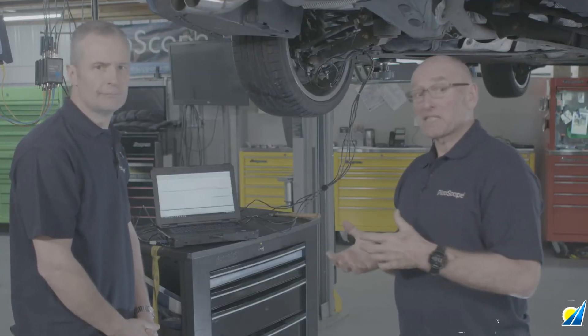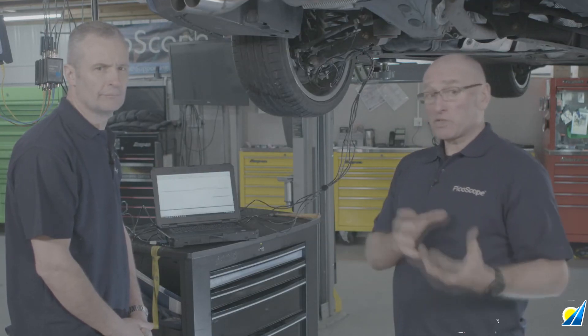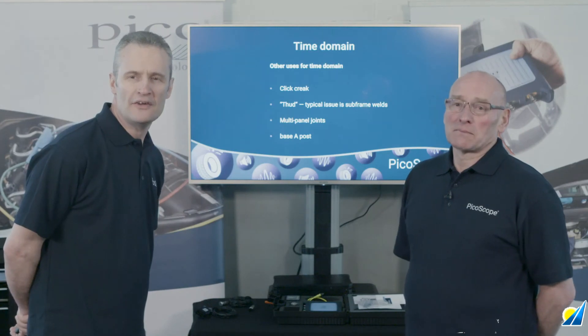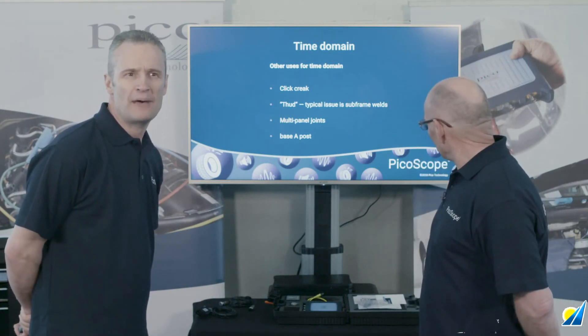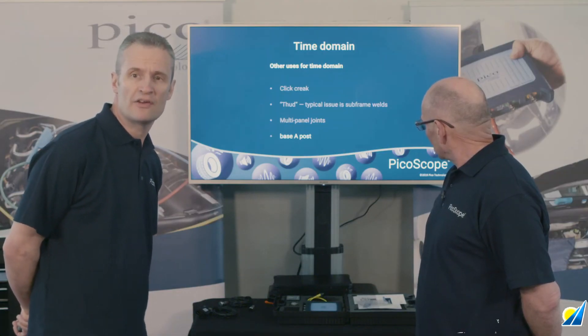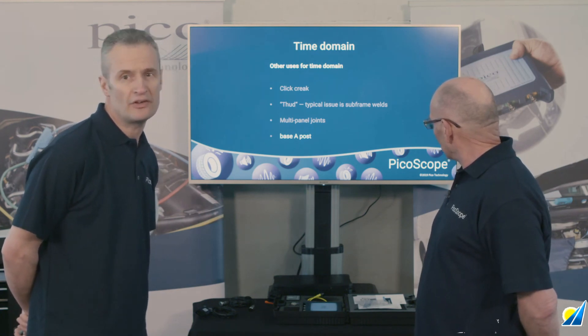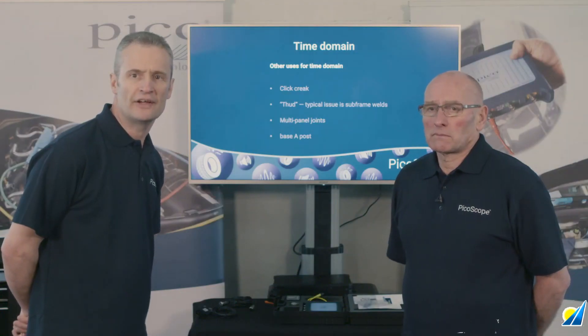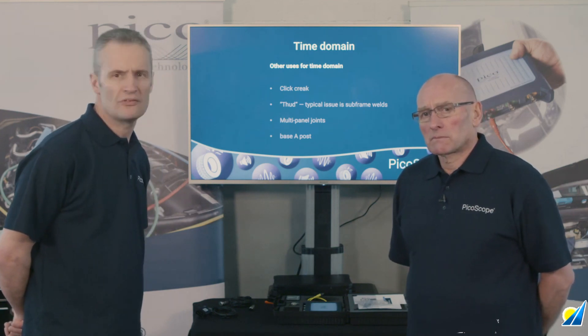The really interesting thing is that although you can physically see movement in the suspension, you can't tell which joint it's coming from — whereas with NVH time domain you can very clearly pinpoint it. Other uses for time domain include clicks, creaks, panel fretting noises, subframes where sections come together at multiple weld points, panel joints such as tailgate hinges and door hinges, reinforcement panels where slight movement generates a click or creak, and the base of the A-post where the floor, sill, A-post, and bulkhead all meet — any movement there as the car hits a pothole or flexes in cornering.